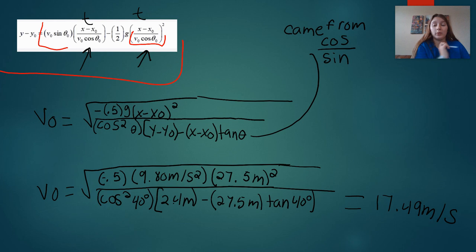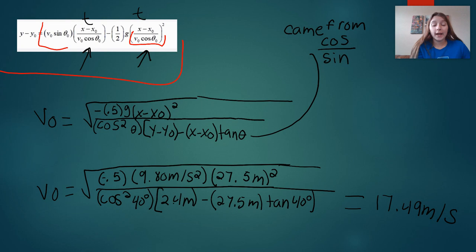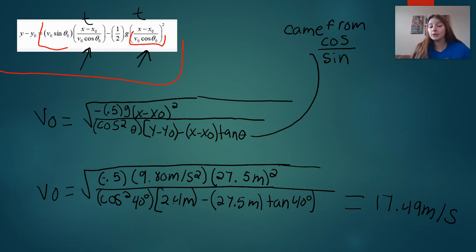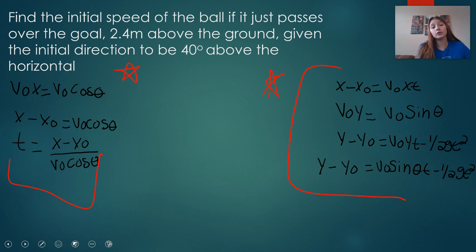The tangent theta comes from cosine over sine in the initial time equation. Once we plug our numbers in, v naught is equal to the square root of negative one half times 9.8 meters per second squared — that comes from gravity, which is the only thing acting on the ball, no air resistance — times 27.5 meters squared, all over cosine squared of 40 degrees times 2.4 meters minus 27.5 meters times tangent of 40 degrees. That equals 17.49 meters per second.